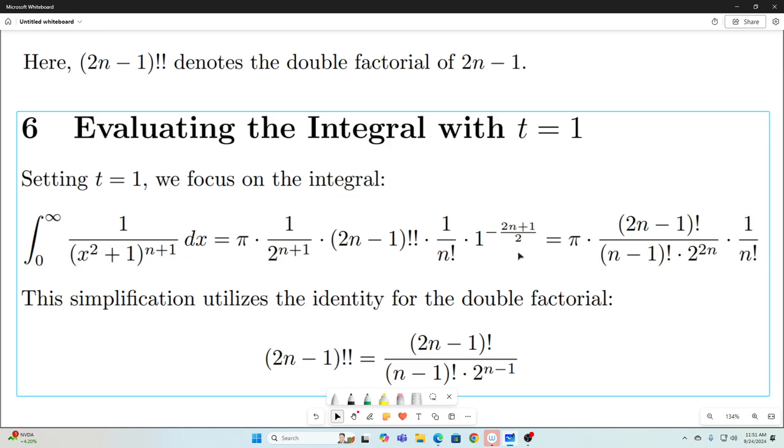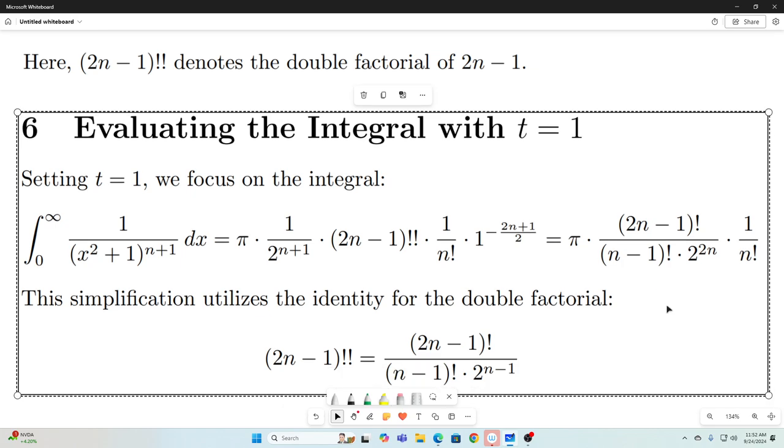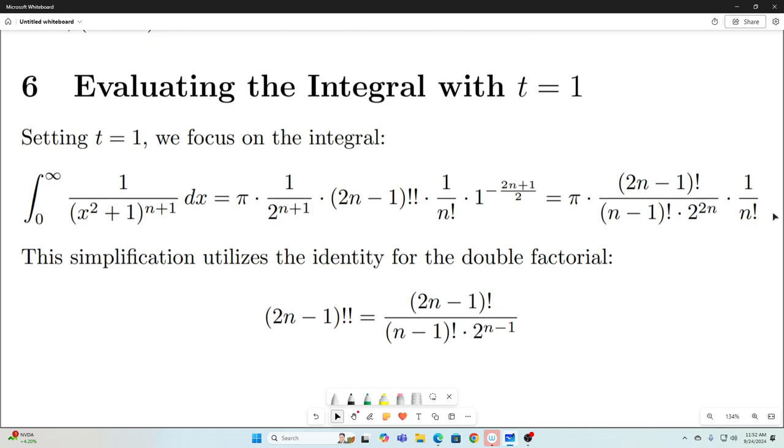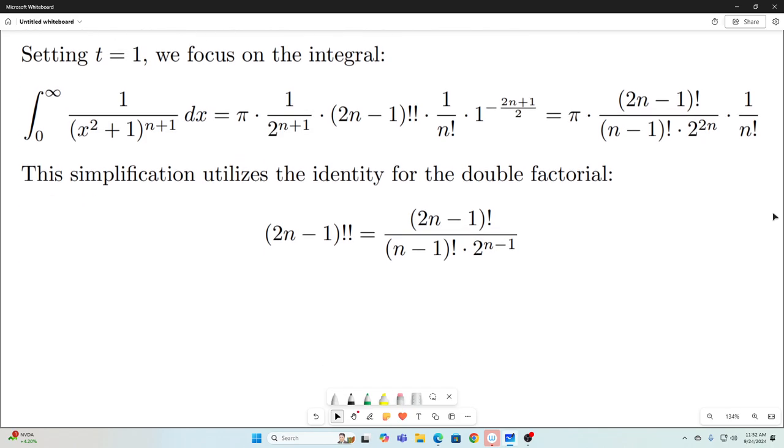And you'll also notice something else that I did. You'll notice that from here to here changes a little bit. We no longer have this 2n minus 1 double factorial. Instead, I just use the formula for 2n minus 1 double factorial. And this is the formula right here. 2n minus 1 double factorial is going to be equal to 2n minus 1 factorial over n minus 1 factorial times 2 to the n minus 1. Go ahead and verify that for yourself. See if you can come up with that formula on your own. It is true though.